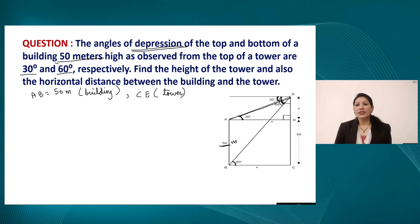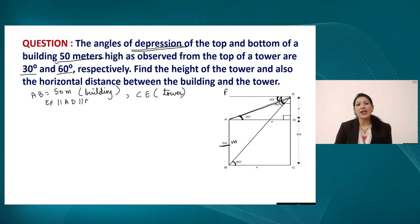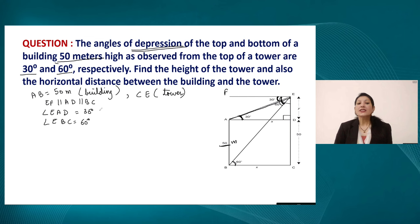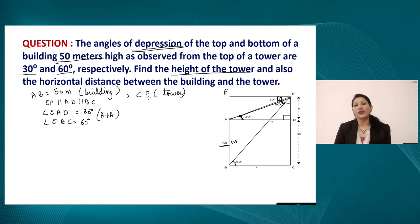Since the angle of depression is 30 degrees, this base angle will also be 30 degrees because the line EF is parallel to both AD and BC. Therefore angle EAD will also be 30 degrees. Similarly, angle EBC will be 60 degrees, as these are alternate interior angles. We need to find the height of the tower CE.